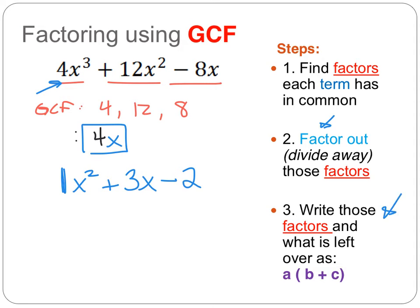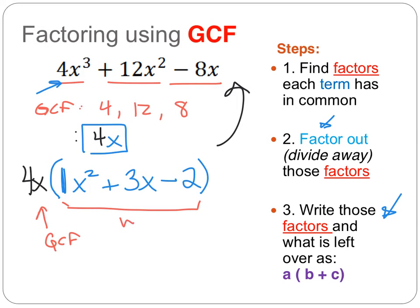Following step 3, we write this using the distributive property form — we put parentheses around what's left over and write our greatest common factor in front. So the result is 4x(x² + 3x − 2). The 4x is our greatest common factor, and the expression in parentheses is what's left over. We divide away the GCF rather than subtracting it, and we can check by distributing 4x back through.